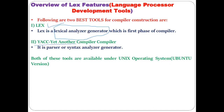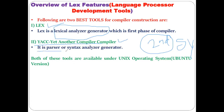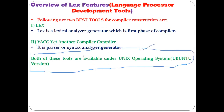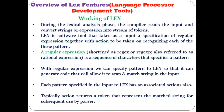The second tool, Yacc, is a parser generator — it generates the syntax analyzer, which is the second phase of the compiler. Both tools are available under the Unix operating system. So the two important language processor development tools for compiler construction are: Lex, to develop the first phase (lexical analyzer), and Yacc, to develop the second phase (syntax analyzer/parser).